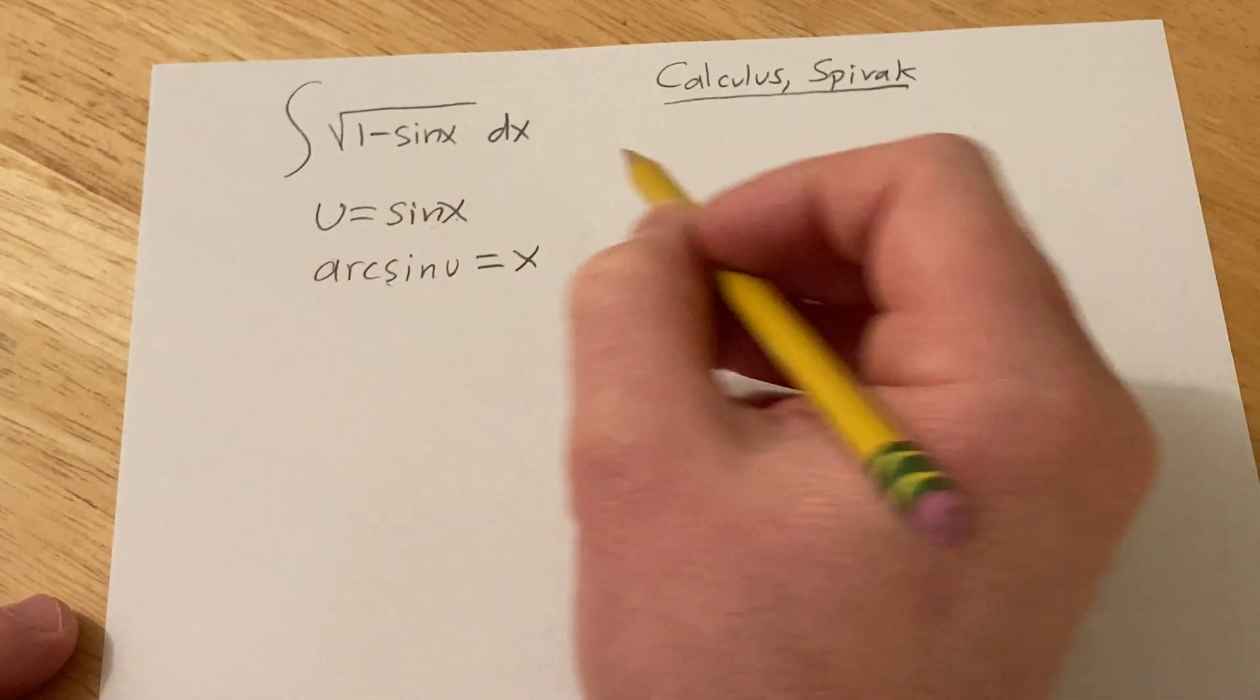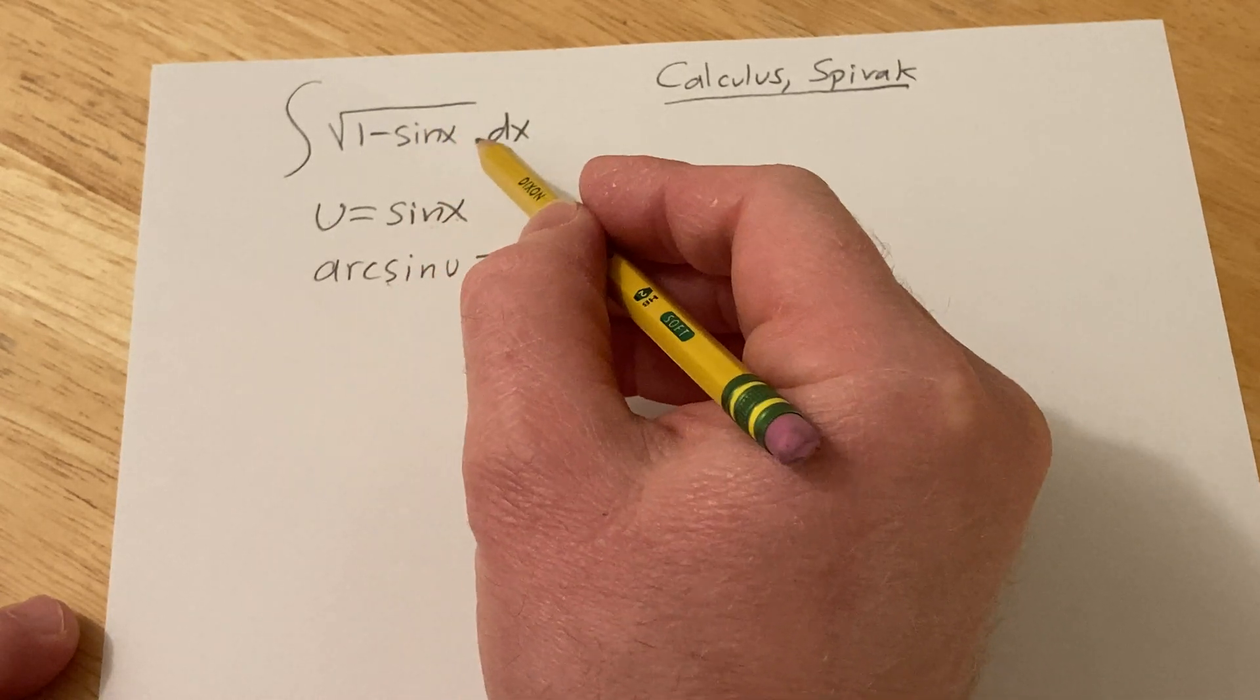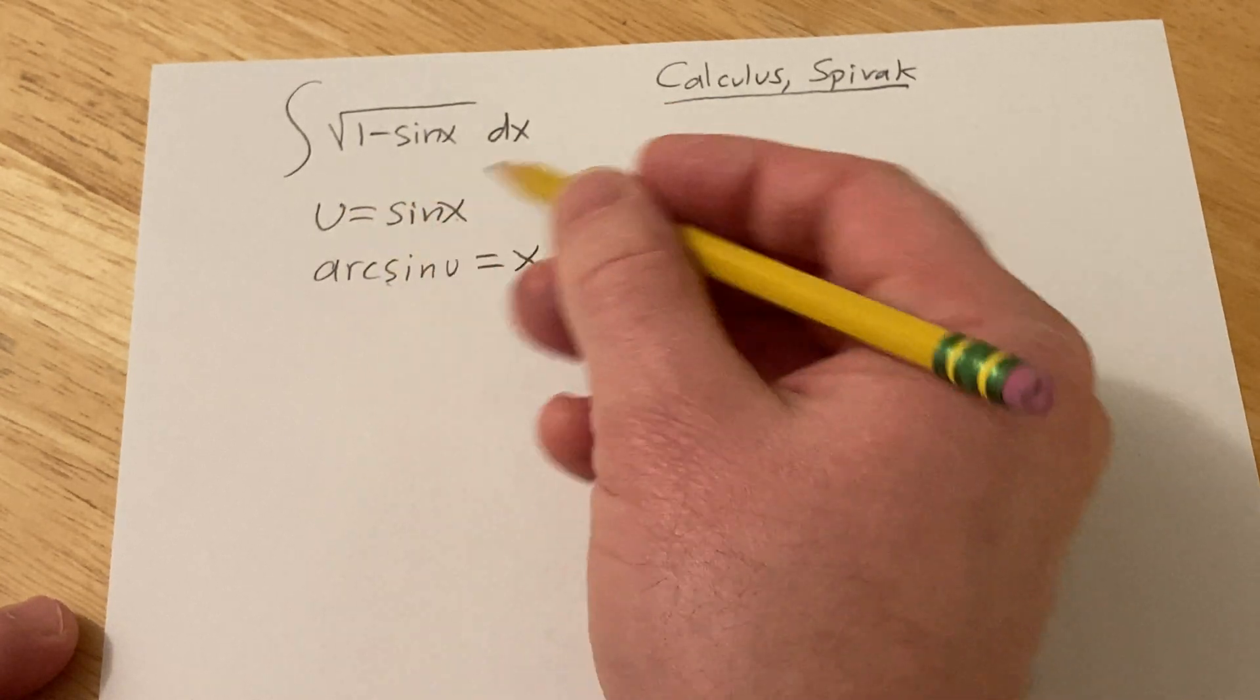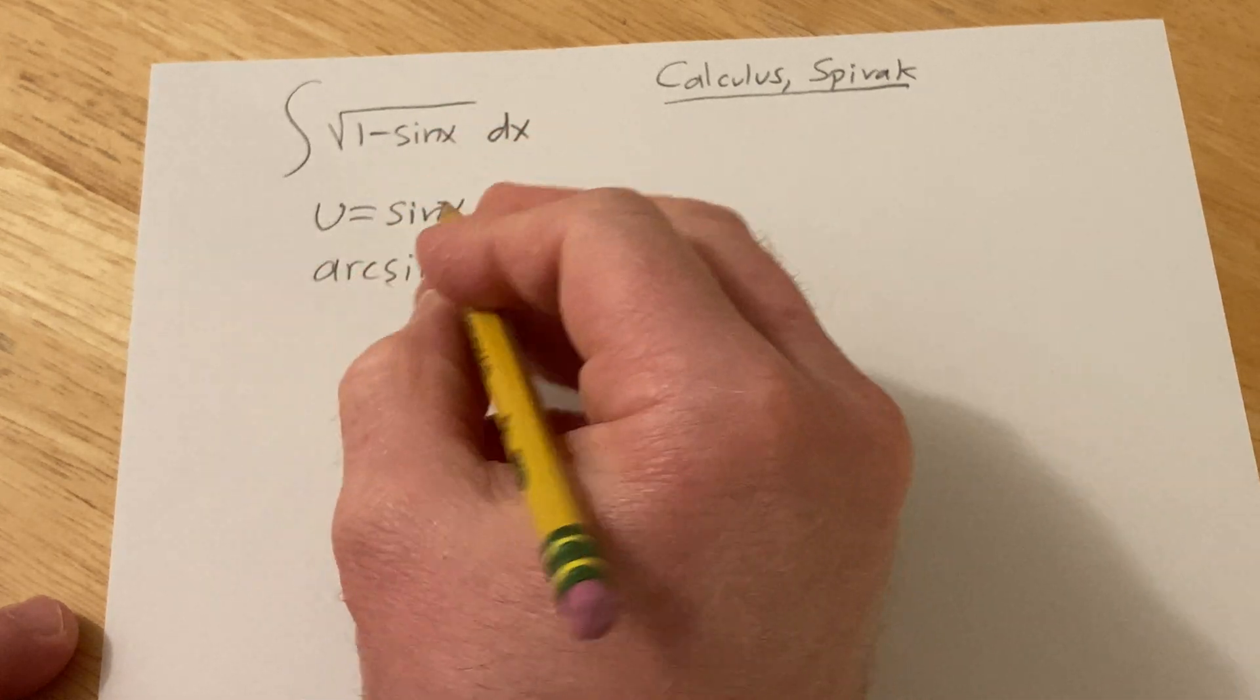And the reason I'm trying this is because if I just compute du here, I'm going to get cosine x dx, and there's no cosine here. However, now when I take the derivative here, I should get some type of square root, so maybe it will work out. I have not done this problem entirely, but I think this will work.